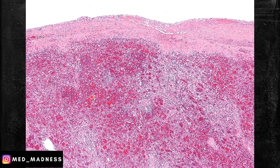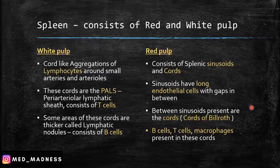This is the histology slide of a spleen. You can notice the red pulp areas here — remember the sinusoids and cords of Billroth — and the white pulp areas. Remember the PALS, which is predominantly T cells, and the lymphatic nodules, which are predominantly B cells.